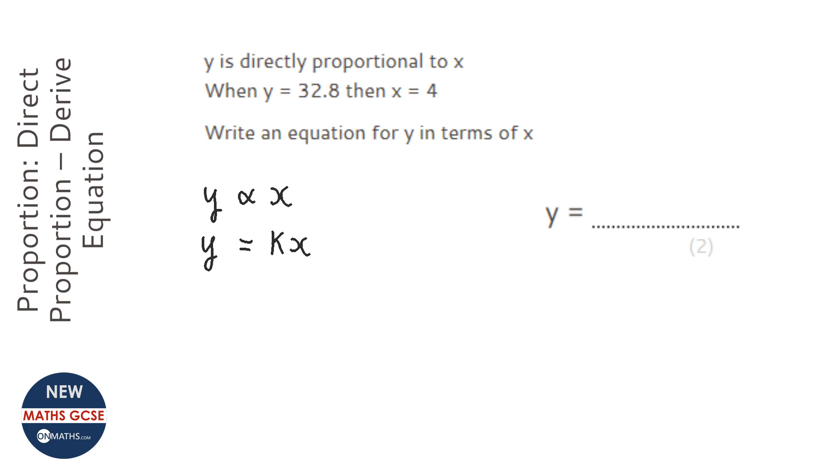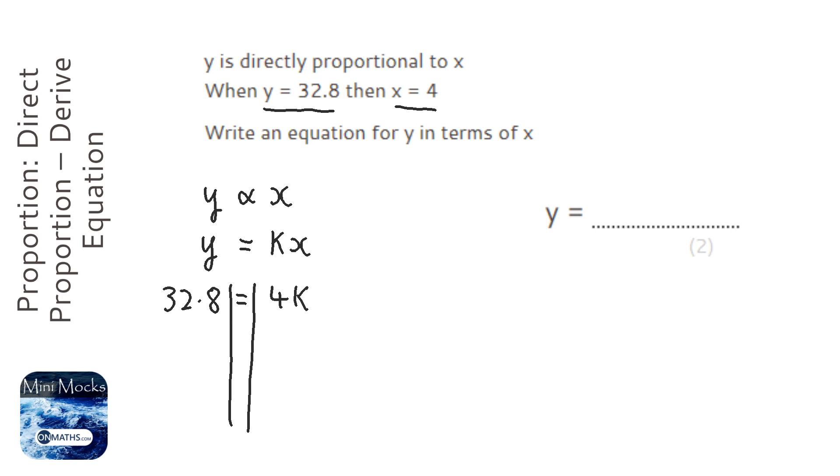Then what we do is put in the values that it gives us in the question into this new equation. So this becomes 32.8 equals 4k. We need to work out what k is, so we draw our lines. We're going to divide both sides by 4.